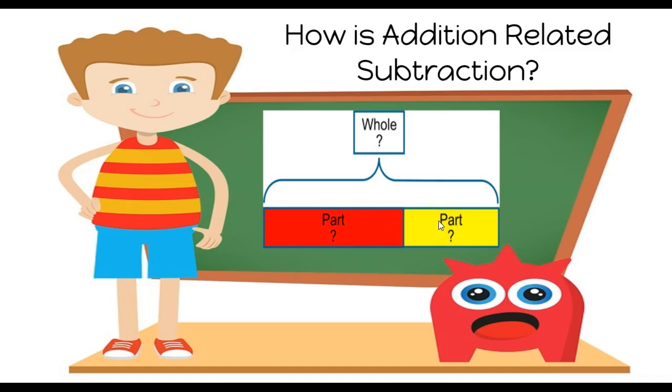It's called a bar model where we have the two addends and you'll see them visually separating the larger one with the smaller number, putting together to make the whole.